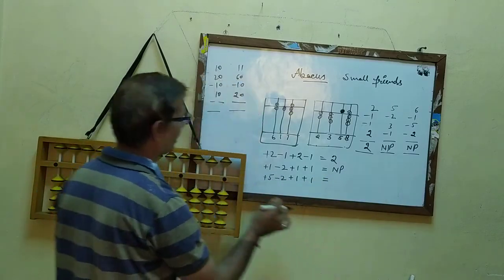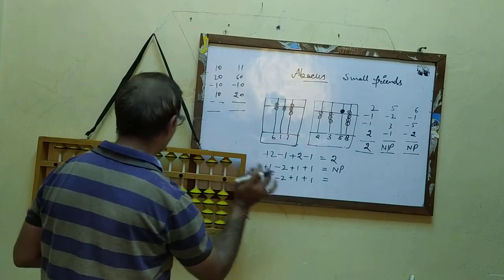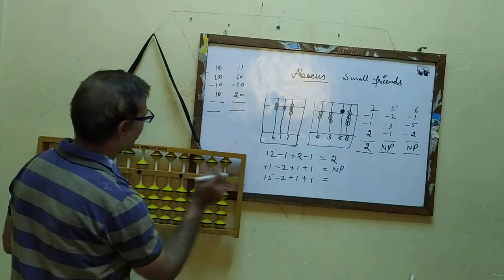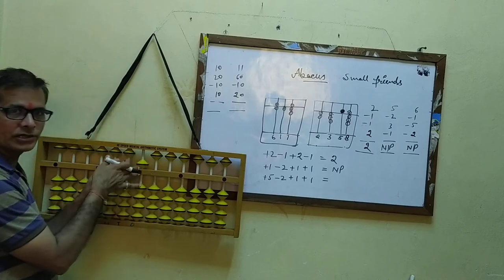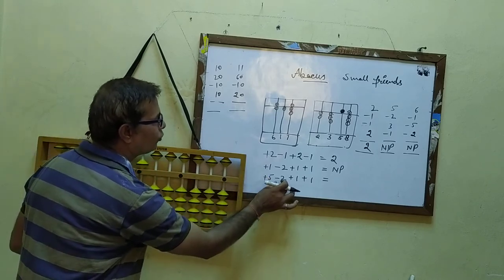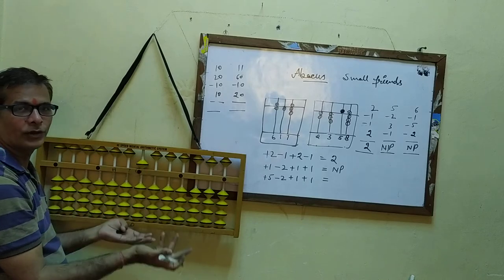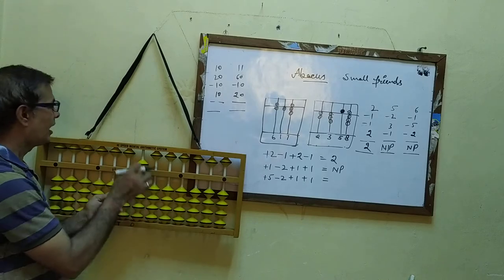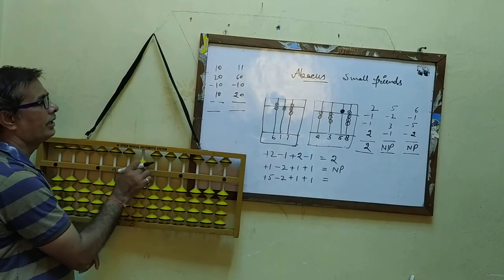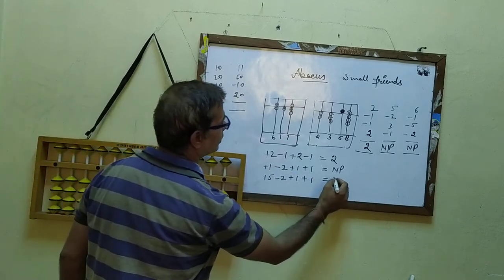Next question: plus five — plus five means touch the bar. Then according to the question, minus two. I have only a single digit five, and I cannot minus all of this, so this question is also not possible.